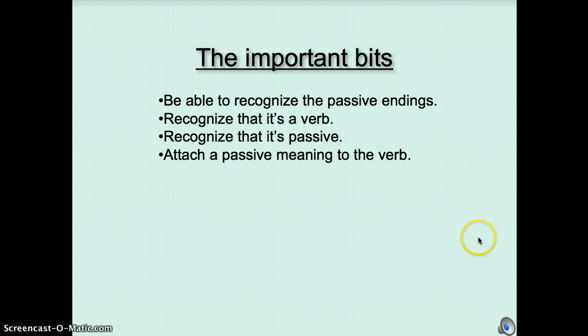Here's some important tips that we need to remember. You've got to be able to recognize those passive endings. You've got to recognize that the thing is a verb. For the moment, until you get used to it, these are going to look a little weird to you, but you've got to pick up that that's a verb. You have to recognize that it's passive and attach the passive meaning to the verb. Sometimes people don't do that. But if you remember all that, you'll be just fine. Thanks for listening.